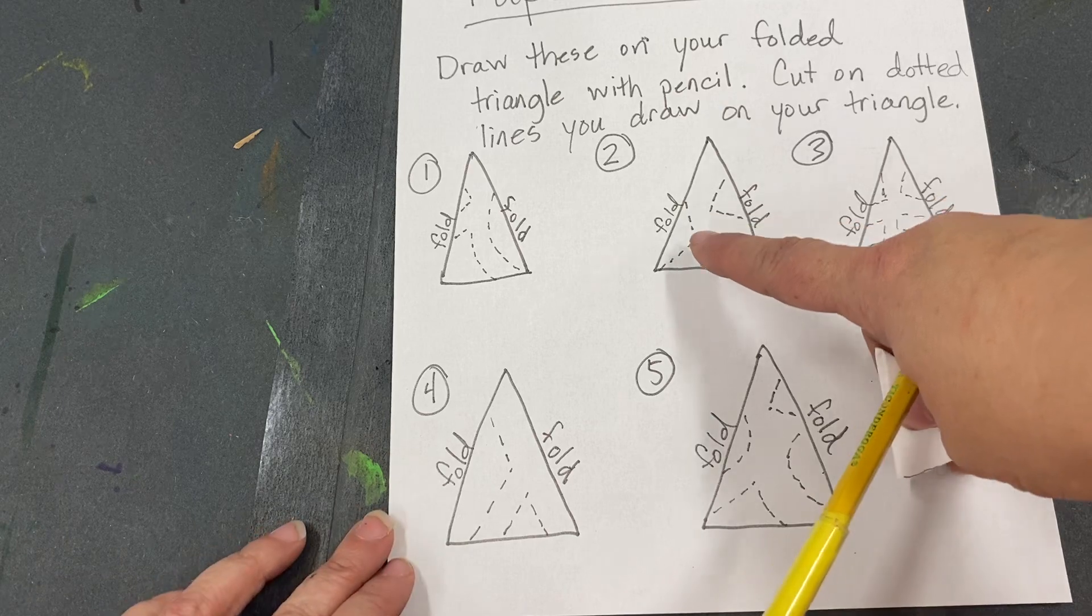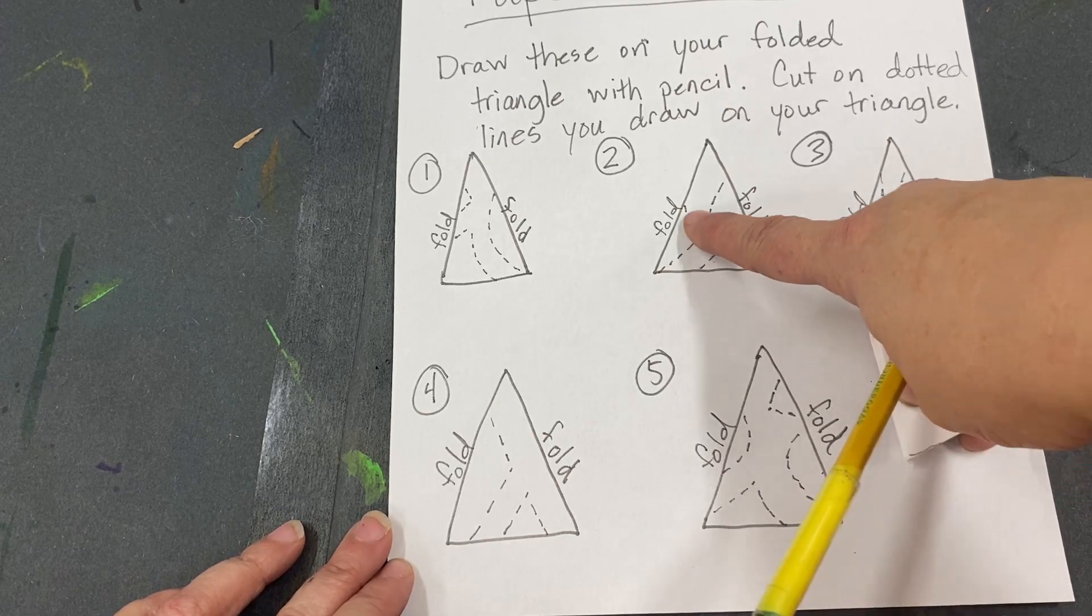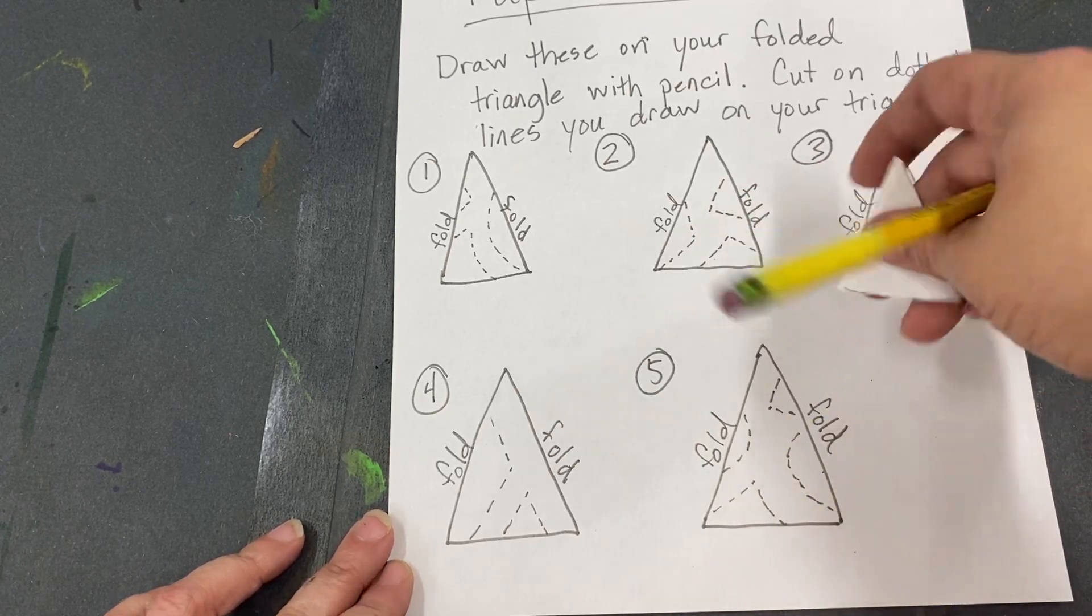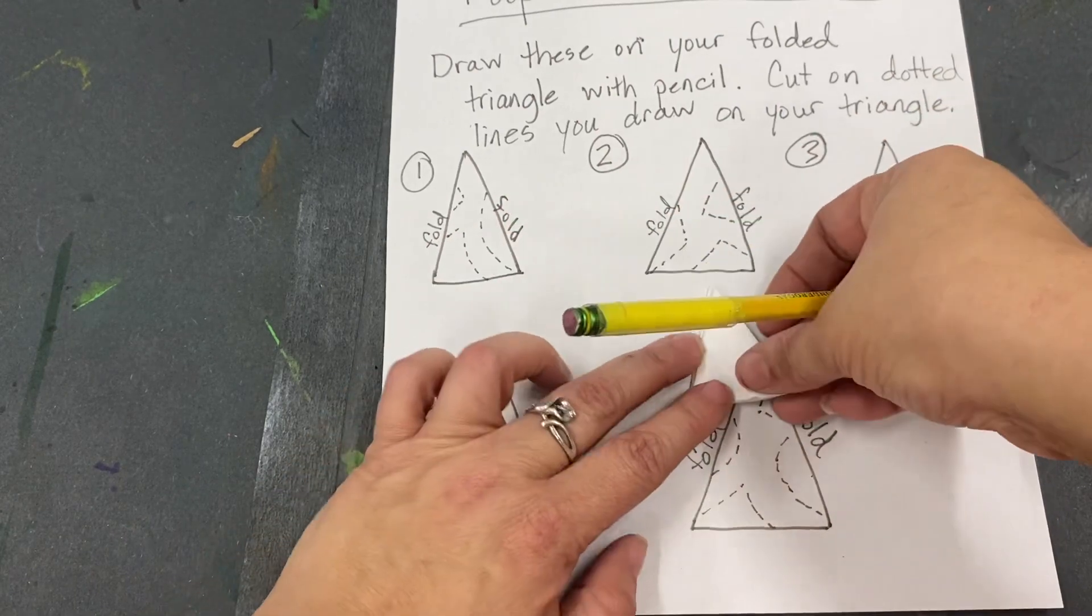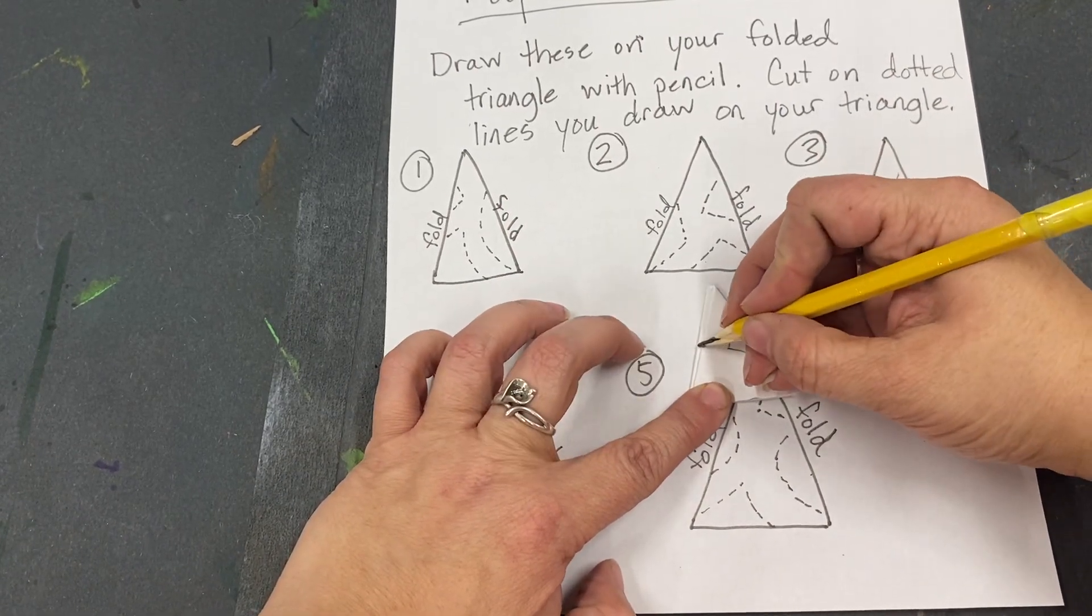So if you pick one of these, I'm going to just pick number two here. Very simple. It shows you where to draw some different shapes. So the dotted lines are going to be what you draw. So I'm going to draw just like I see here.